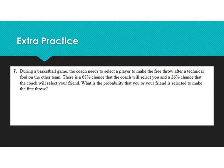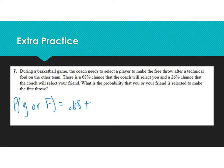Let's look at number 7. During a basketball game, the coach needs to select a player to make a free throw after a technical foul. There's a 68% chance the coach selects you and a 26% chance the coach selects your friend. The probability of you or your friend: 68% plus 26%. The overlap would be selecting both of you, but he can't because only one person can shoot the free throw. So no overlap — just add them together. You get 0.94, which is 94%.